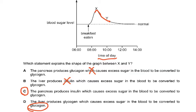Please know the differences between glycogen and glucagon. Insulin is a hormone; glucagon is a hormone. In the liver, glucose is converted to glycogen. Glycogen is a storage carbohydrate. Glucagon is a hormone produced by the pancreas.